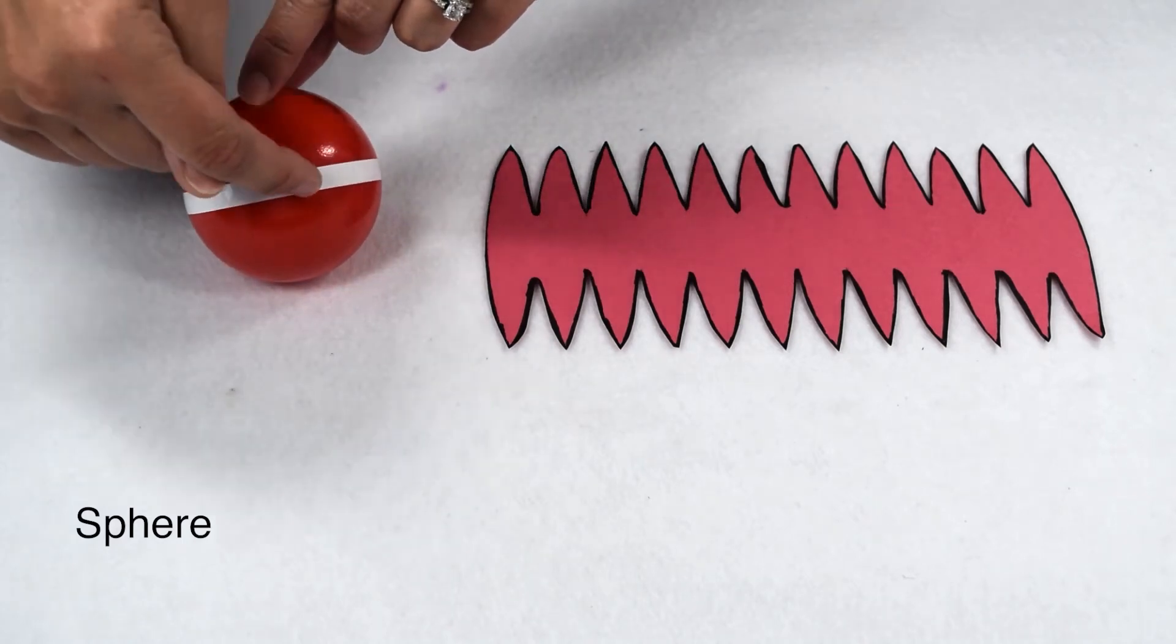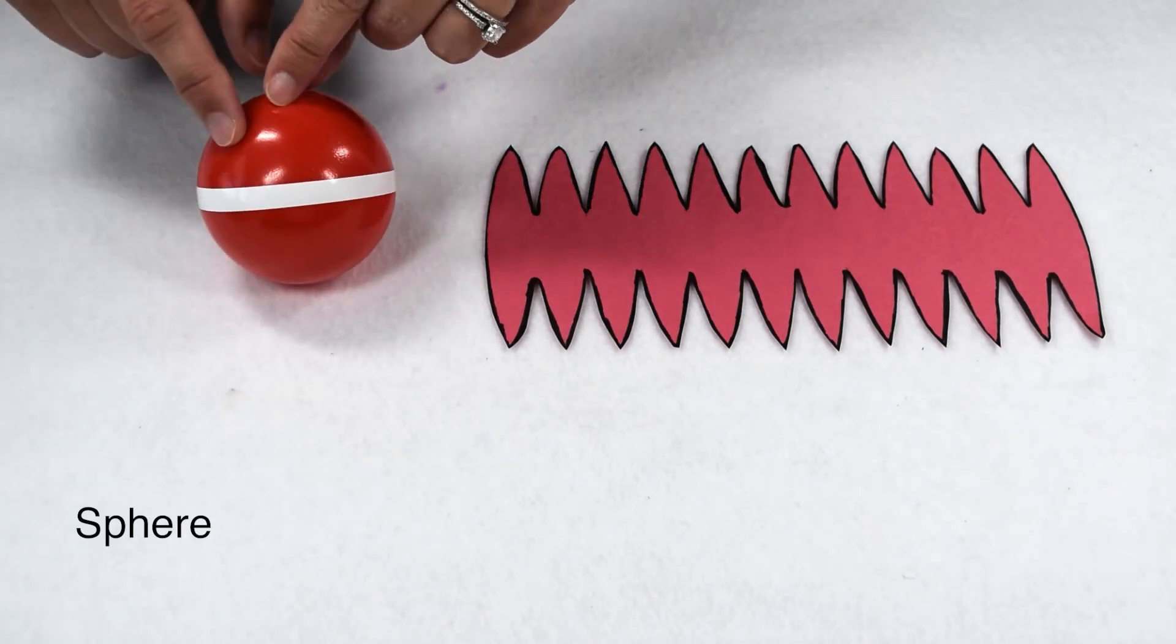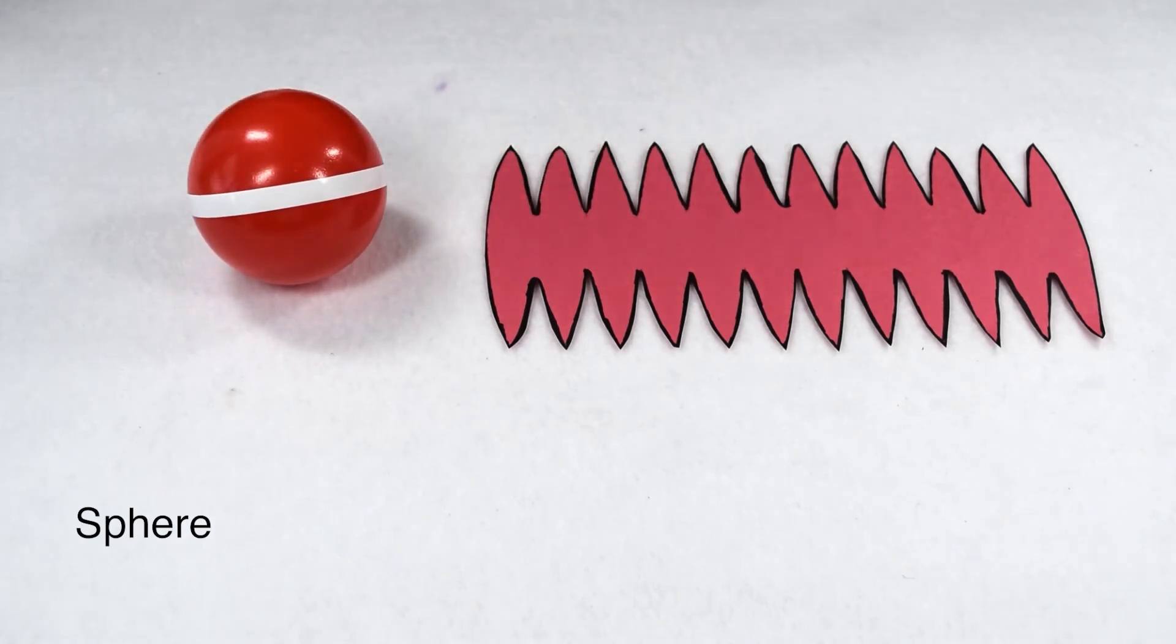However, another part of the sphere that we should take note of is called the great circle. The great circle of the sphere is the circumference of the sphere around its widest part.